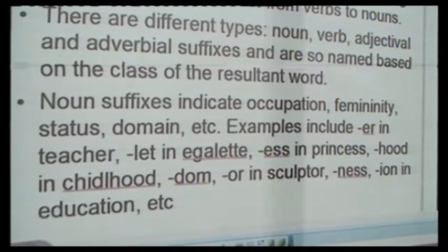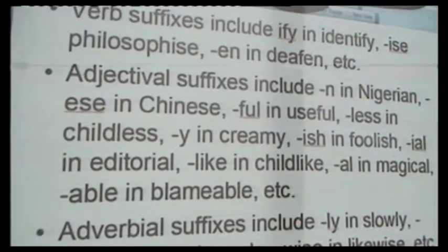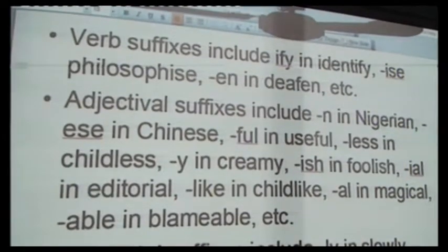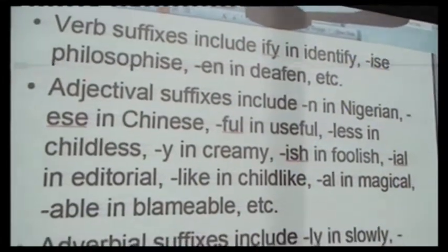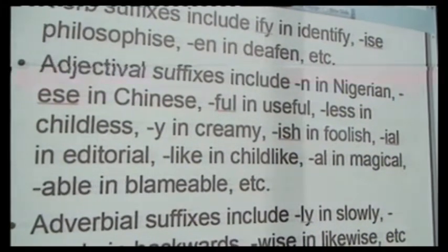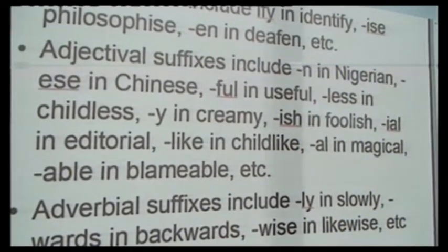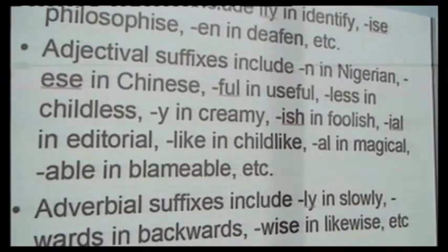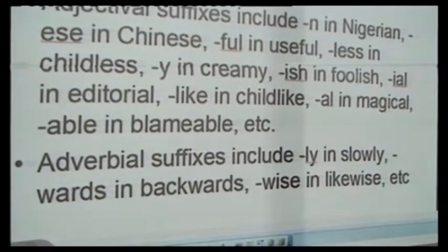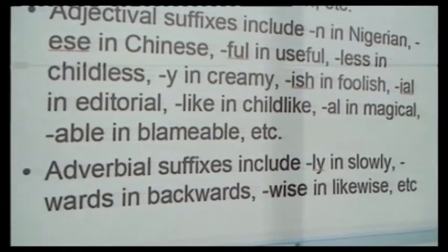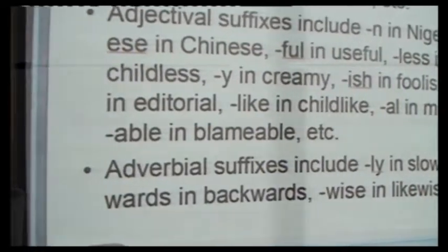We can also talk about verb suffixes, which include '-ify,' '-ise,' and '-en.' For example, '-ise' in 'philosophize,' '-en' in 'deafen.' You also have adjective suffixes such as '-ian' in 'Nigerian,' '-ese' in 'Chinese,' '-ful' in 'useful,' '-less' in 'childless' — 'child' is a noun, but when you add '-less' to 'child,' you have 'childless,' which is an adjective. We have adverbial suffixes; the most common is '-ly.' When you add '-ly' to 'slow' or 'quiet,' you have adverbs such as 'slowly' and 'quietly.' You also have '-ward' in 'backwards' and '-wise' in 'likewise.'